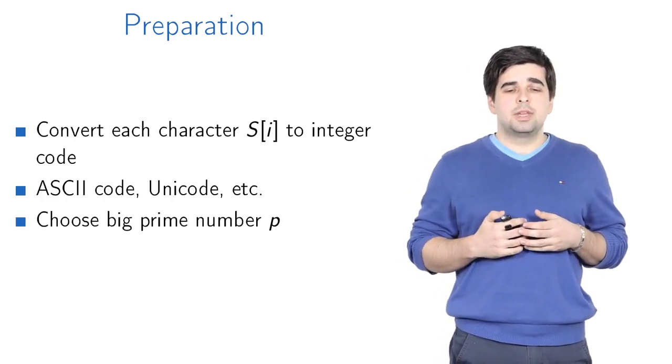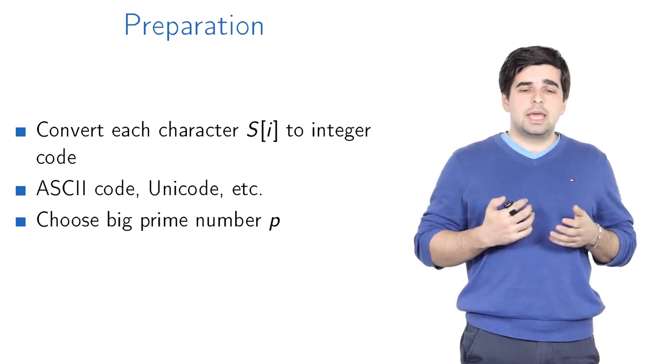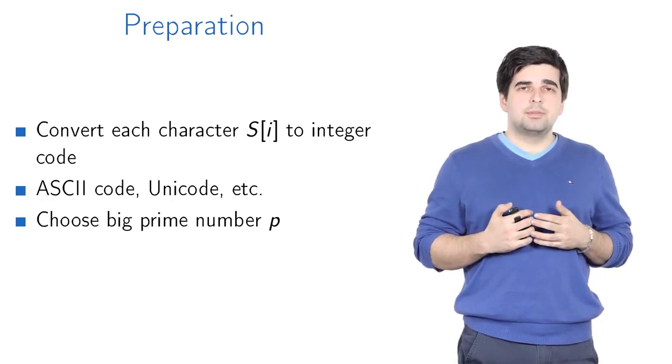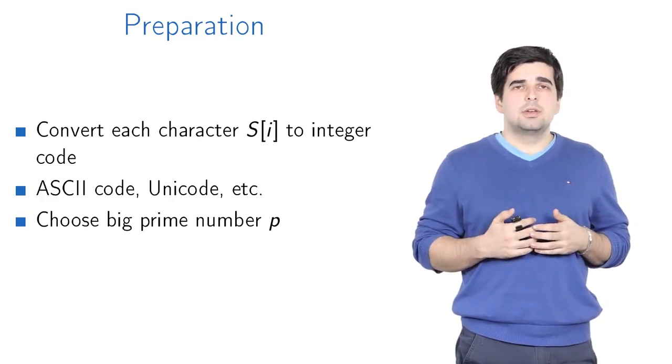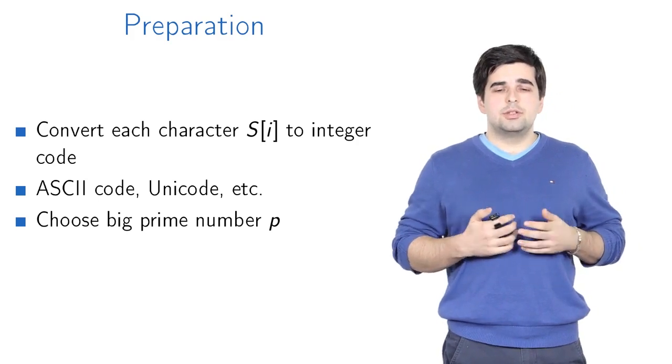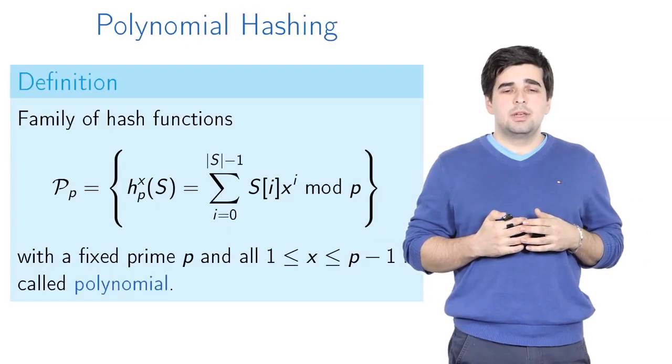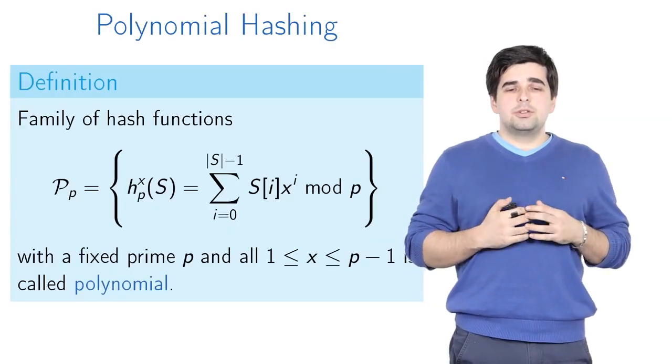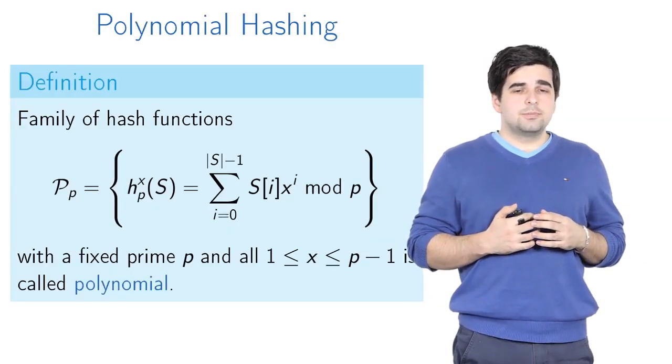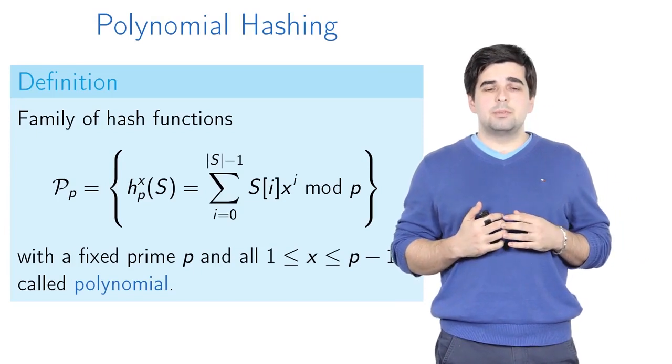And also, we will again need to choose a big prime number p, the same as we used in the integer hashing. So suppose we've chosen some big prime number p.